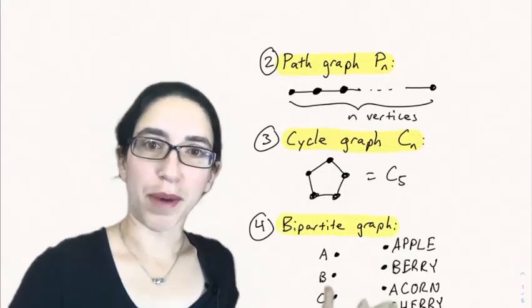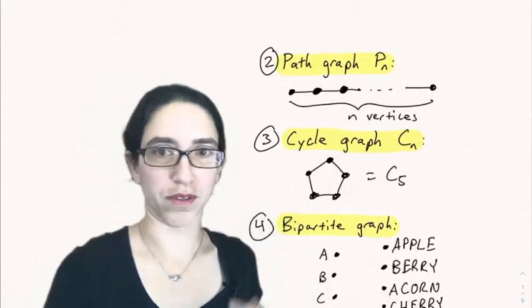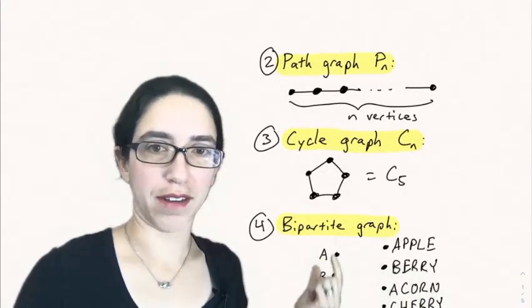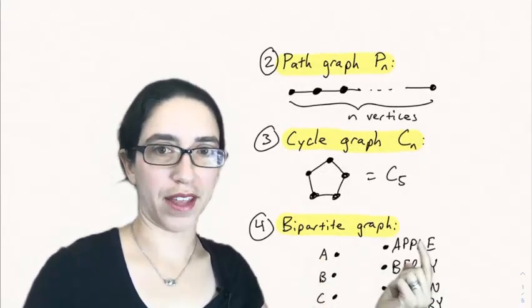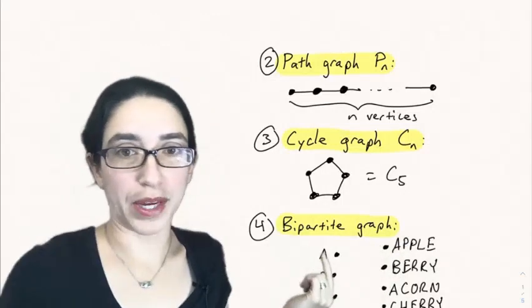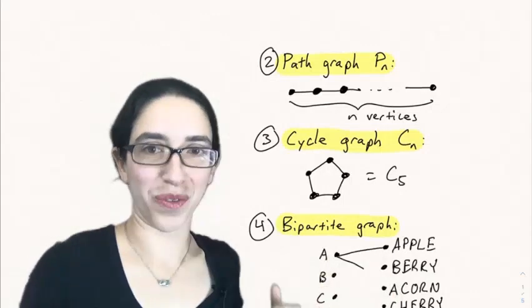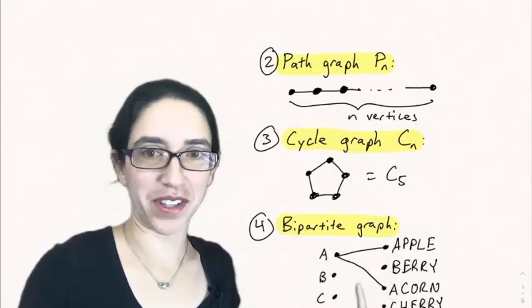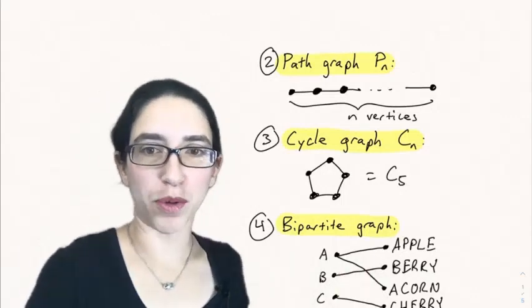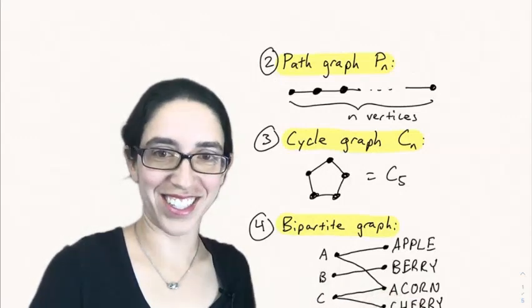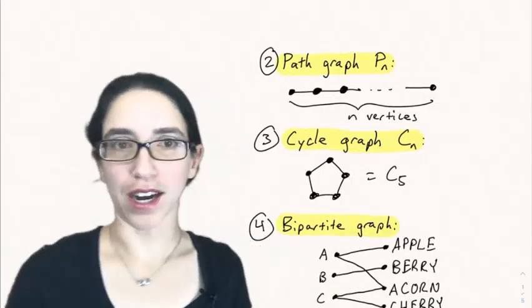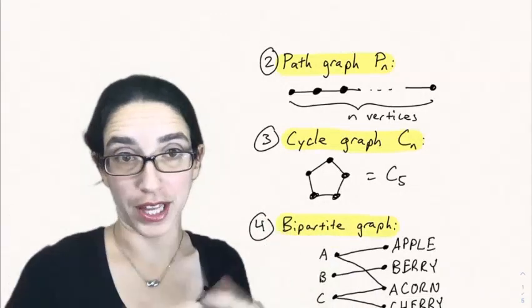And another example is a bipartite graph. So this is not one specific example of a graph. It's just a class of graphs that has the property that you have a left set and a right set. Here I have a, b, and c on the left and then a bunch of words on the right: apple, berry, acorn, and cherry. And maybe we can draw the graph where we connect a letter to a word if that letter is in the word. So A is certainly in apple and acorn but it's not in berry or cherry. B is in berry. And C is in both cherry and acorn. So don't forget that C in acorn even though it's not the first letter of the word. So that's an example of a bipartite graph where we match two different types of objects based on some relation between them.